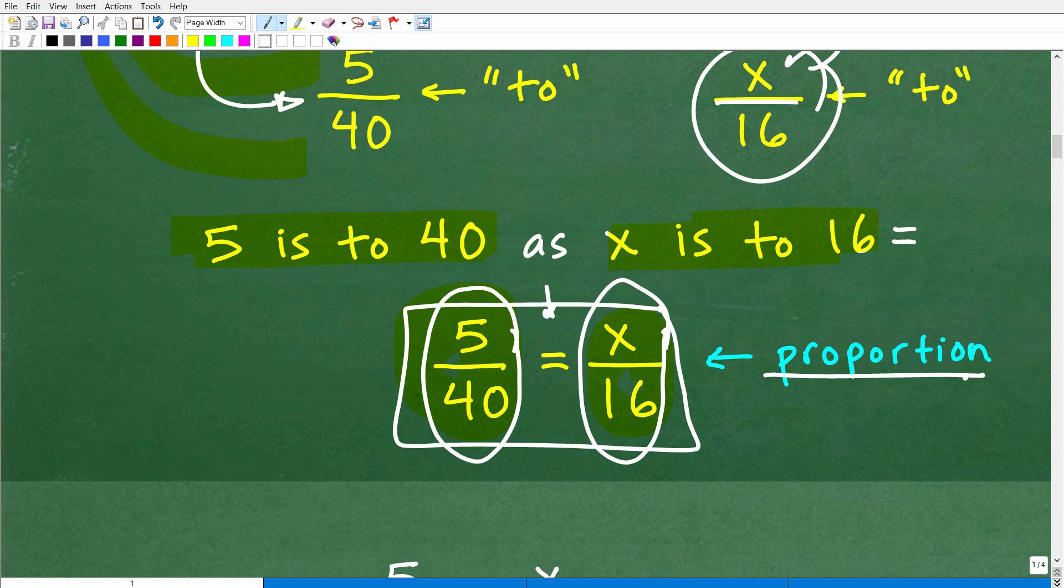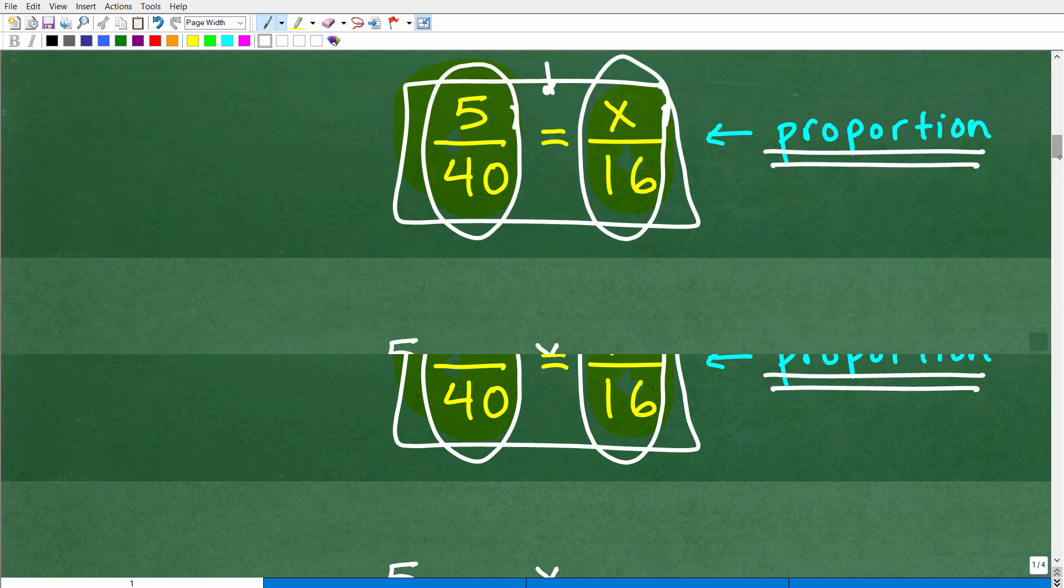And what we're saying is we have one ratio, which of course is a fraction, equaling another fraction or ratio. So two equal ratios or two equal rates or two equal fractions are all basically the same thing. By definition, that is what we call a proportion. So we're dealing with a proportion. So if you said in the comment section you think we're dealing with a proportion here or we're dealing with ratios, all those answers would be outstanding. Okay, so now what we have to do is solve this proportion.